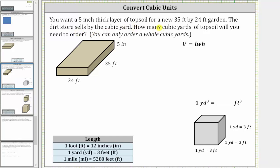You want a five inch thick layer of topsoil for a new 35 foot by 24 foot garden. The dirt store sells by cubic yard. How many cubic yards of topsoil will you need to order? You can only order a whole number of cubic yards.